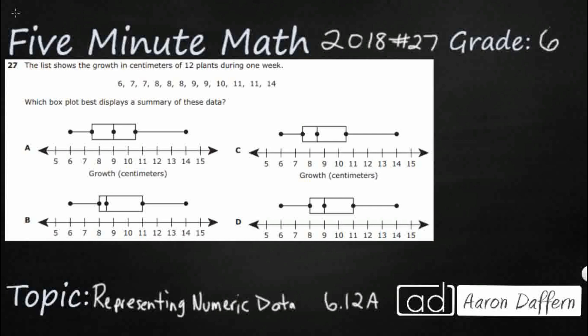So we have a box plot, and it's a good way to show data sets. We have these 12 numbers up at the very top and we need to know which of these is best represented by the box plot below — A, B, C, or D. Here's the thing with box plots: they work really heavily in quartiles.